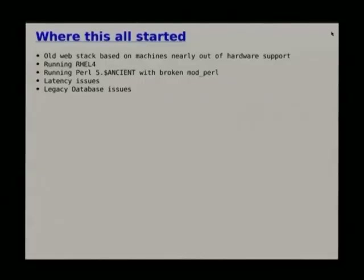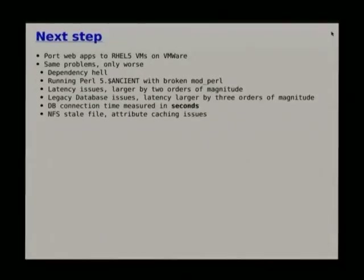Some years ago we started off with a bunch of RHEL 4 boxes and wanted to modernize. We had CGI hell and wanted to migrate to more modern Perl and more modern web apps. There was a lot of legacy stuff — ancient Perl, more latency, legacy apps we were trying to move away from. We were back on Oracle, which is not my favorite database. We had a whole stack of issues with latency, and lots and lots of other things. So we moved to VMs of RHEL 5 on VMware because that's where the university was going.